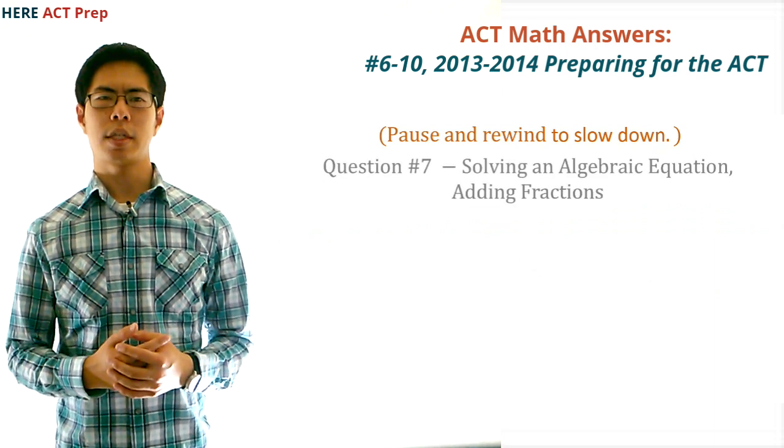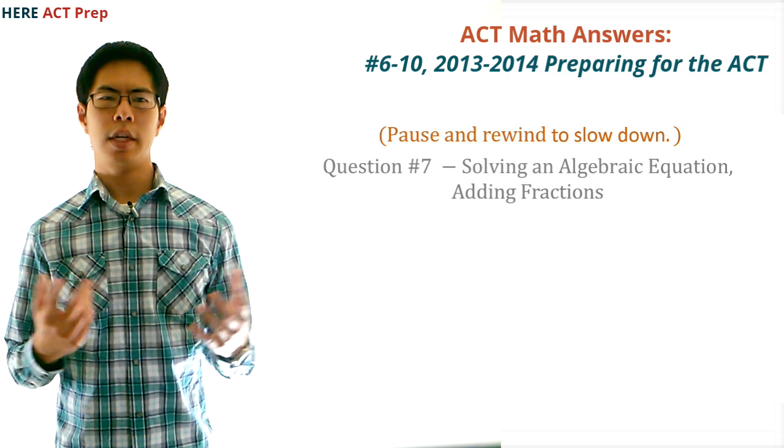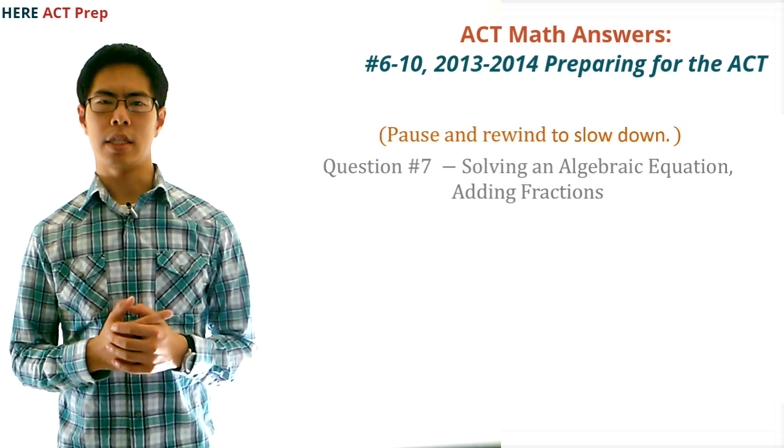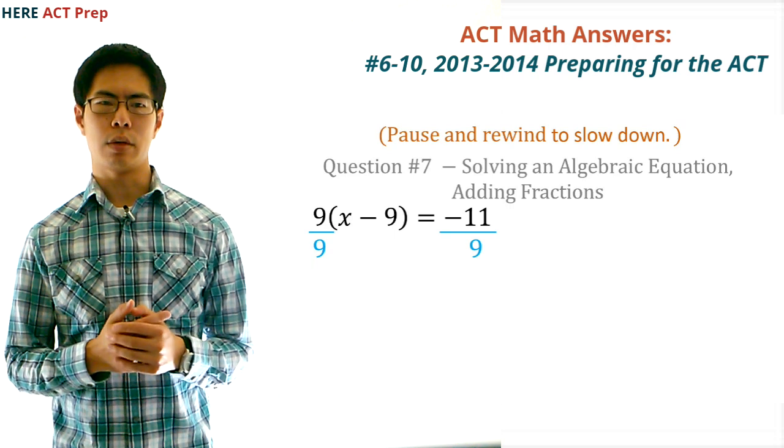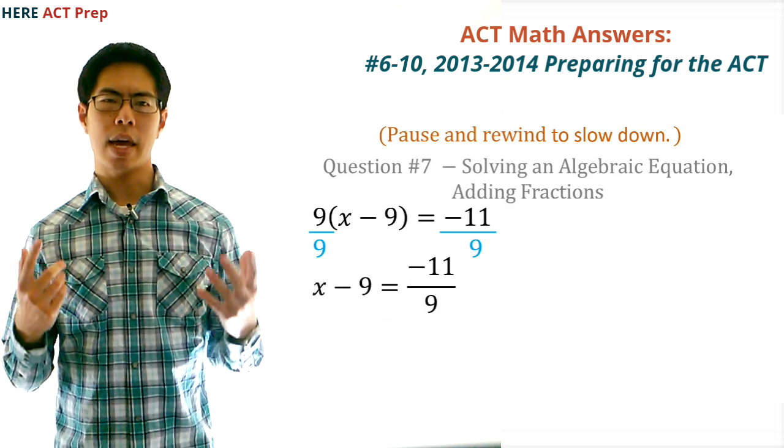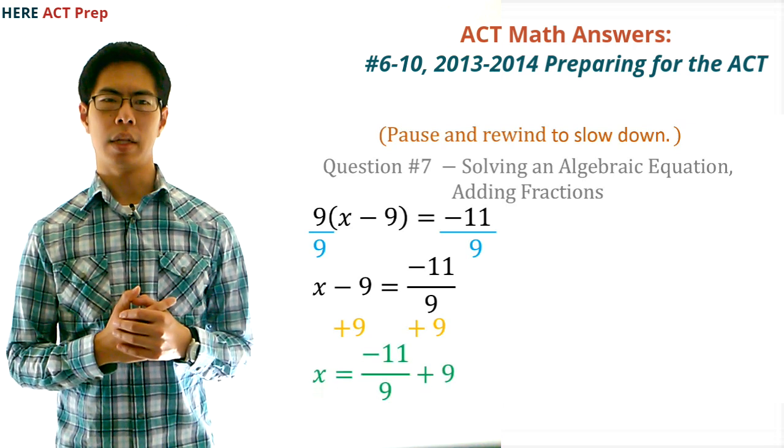Question 7. The concept this question tests is solving an algebraic equation and adding fractions. We need to do stuff to the equation to get x by itself. So first, we'll divide both sides by 9, which gives us x minus 9 equals negative 11 divided by 9. Next, we add 9 to both sides, which gives us x equals negative 11 over 9 plus 9.